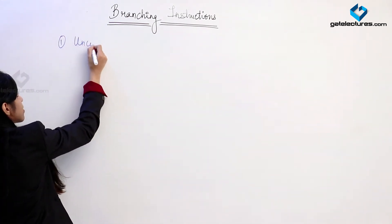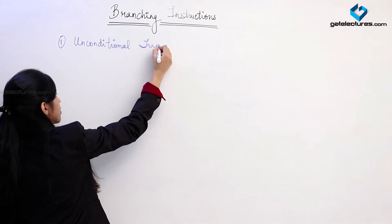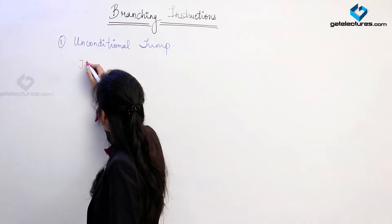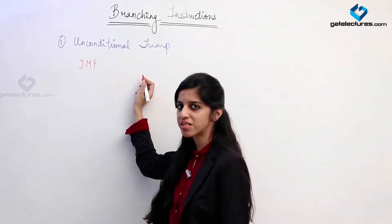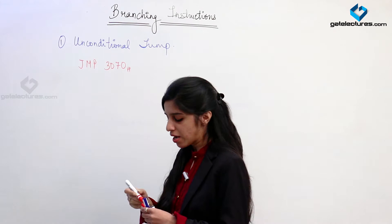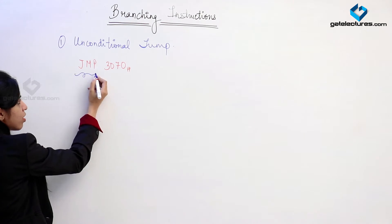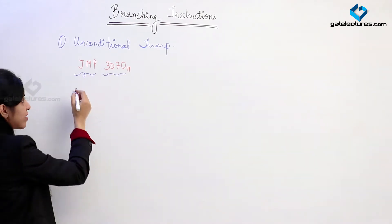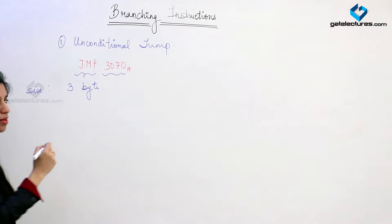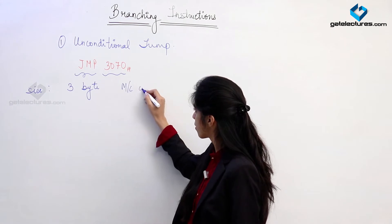The first type is unconditional jump. The instruction we are using is JMP and we are giving a 16-bit address — whatever address you want to jump to. For example, JMP 3070. This is a 3-byte long instruction: 1 byte stores the opcode, then 2 bytes are required for storing the address. It is having three machine cycles.